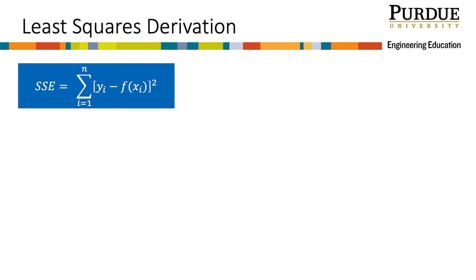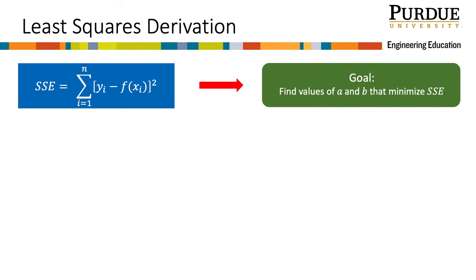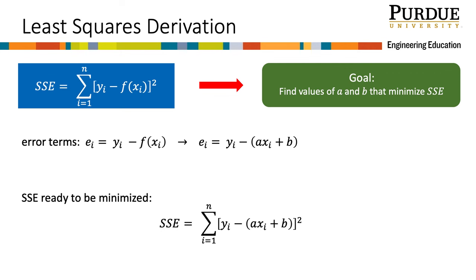We will use SSE to find the equation of our model line using least squares regression. Here we have our SSE equation, and our goal is to find values of the slope a and the y-intercept b that minimize the SSE. Since f of x sub i is the same as ax sub i plus b, we can substitute this into the error term equation. In the same way, we can replace f of x sub i with ax sub i plus b in the SSE equation to get an SSE that is ready to be minimized with respect to a and b. Minimizing suggests that we will use derivatives.